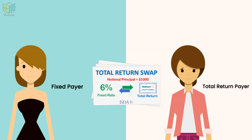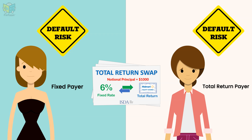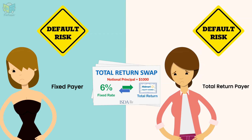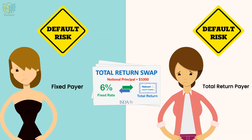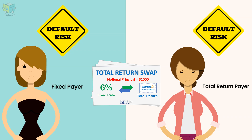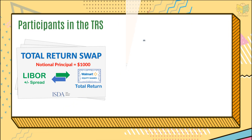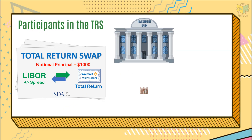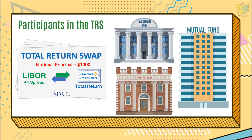However, as this is an OTC agreement, both parties are exposed to default risk, that is, the losing party defaulting on his commitment. Investment banks, hedge funds, and other financial institutions are the major users of such swap agreements.